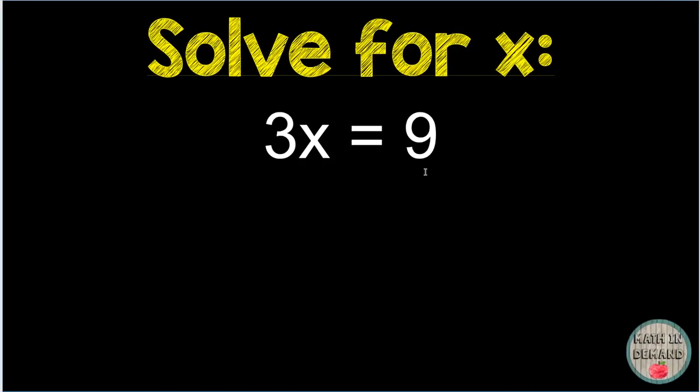Another type of one-step equation we will see, for example, is a multiplication where this is 3 times - there is an invisible multiplication sign. 3 times x equals 9. As seen in the previous problems, the opposite of multiplication is division. So I am going to divide both sides by my coefficient. My coefficient is the number in front of the variable, which is 3. So divide by 3, divide by 3.